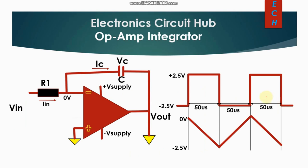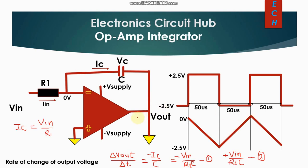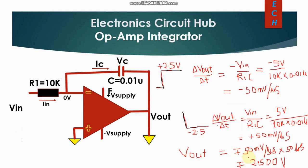The rate of change of output voltage is: ΔVout / ΔT = −IC / C. Since IC = Vin / R1, this gives ΔVout / ΔT = −Vin / (R1 × C) for a positive input signal. For a negative input signal, the rate of change is +Vin / (R1 × C).